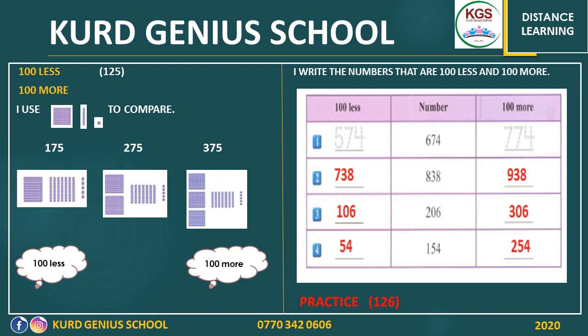Look at the examples — the first one is already done. The number is 674. Give me a number that is 100 less than 674: one less than 6 is 5, so the number is 574. Give me a number that is 100 more than 674: 100 more than 600 is 700, so the number is 774.